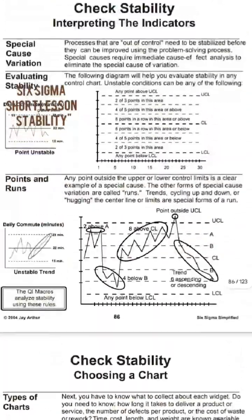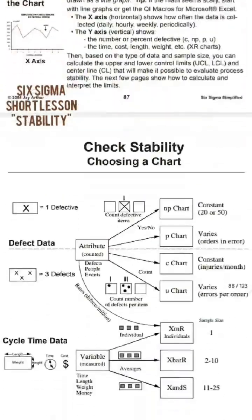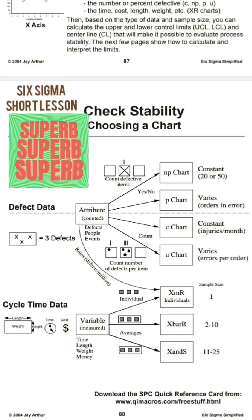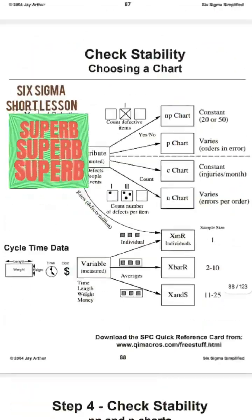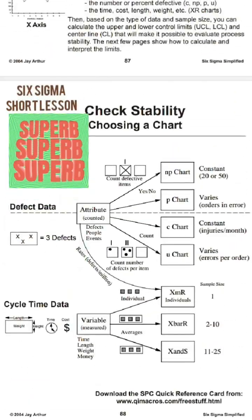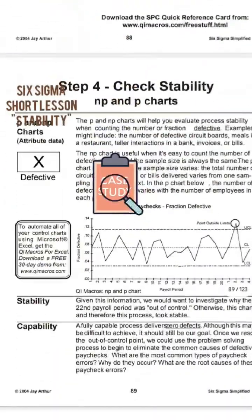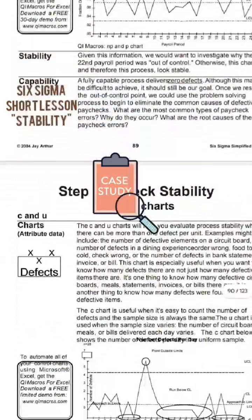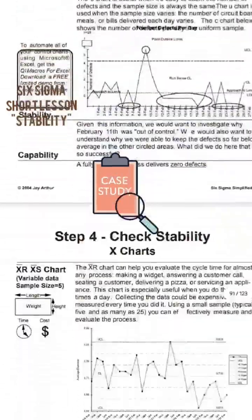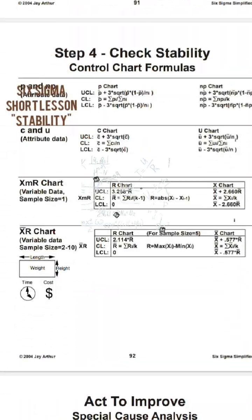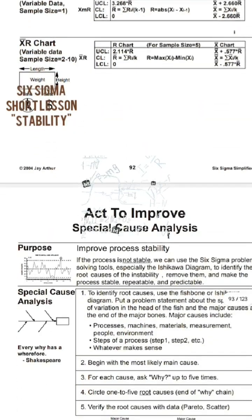Seven control charts have been well elaborated: c chart, u chart, p chart, np chart, IMR chart, X-bar R chart, and X-bar S chart — covering both attribute and variable charts. All of the charts are given with examples and formulas.